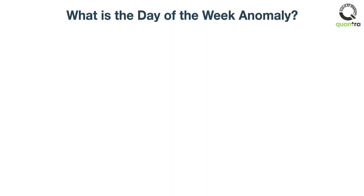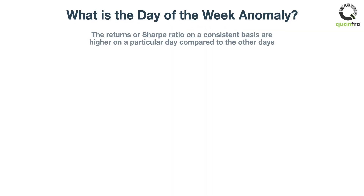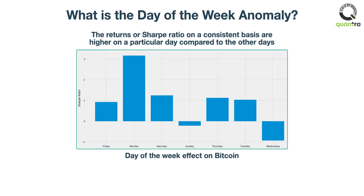It is the anomaly in which the returns or Sharpe ratio on a consistent basis are higher on a particular day compared to the other days. The Sharpe ratio by days for Bitcoin is shown here. The Sharpe ratio on Monday is significantly higher compared to the Sharpe ratio on the other days.